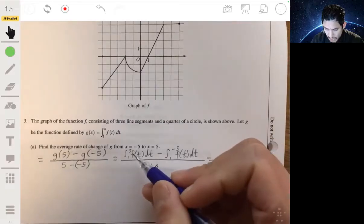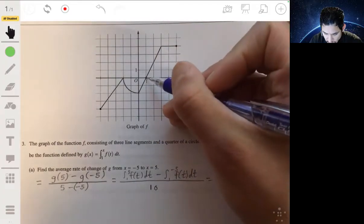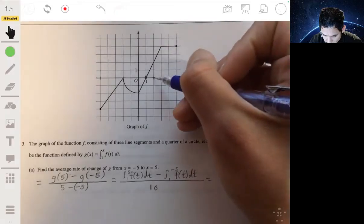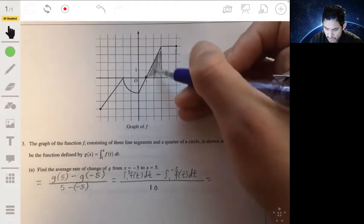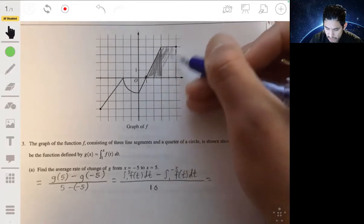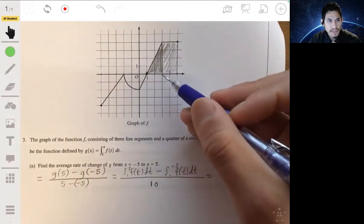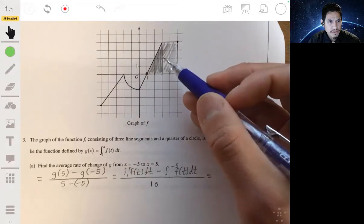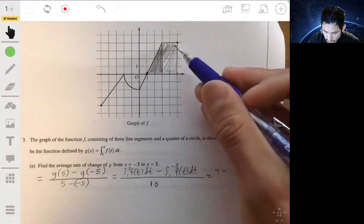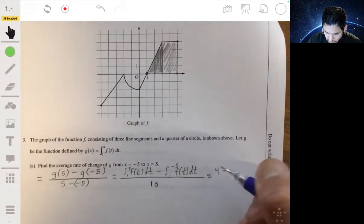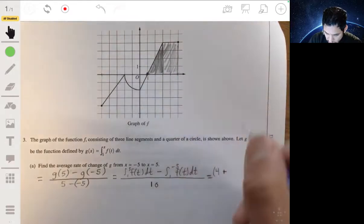Now, the integral from 1 to negative 5 of F of T dt would simply be basically the area from here to, let's see, 2, 3, 4, 5 to here. So this shaded region, you can think of it as the area of this triangle plus the area of this rectangle. So the area of this triangle is just 2 times half of 4. So 2 times 2 essentially. So 4 minus the area of this.